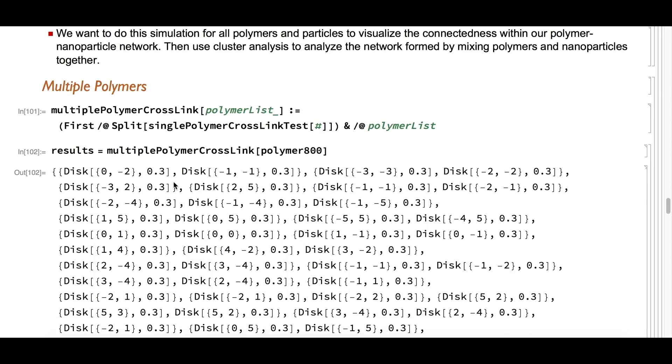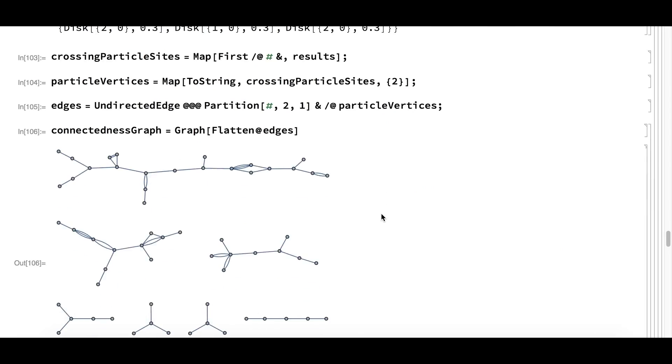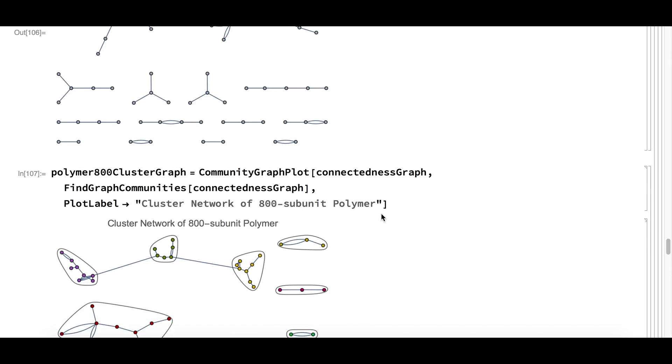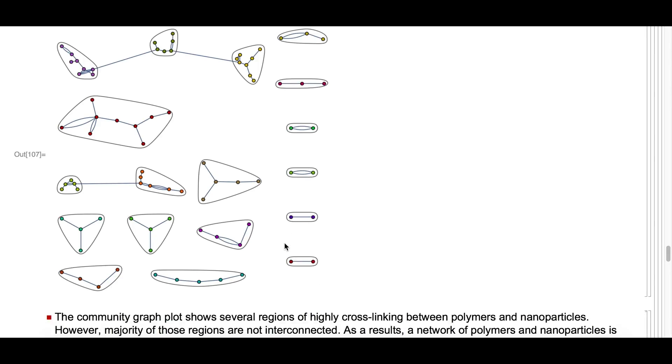We write a function that runs SinglePolymerCrossLinkTest over many polymers of the same length. What I want to show you is the GraphCommunityPlot and FindGraphCommunities. In this graph, you see that there are many clusters which have very dense cross-linking between polymer and nanoparticles. However, most of the clusters do not connect together. This suggests that the network of polymer and nanoparticles may not be formed even though you have many clusters of densely cross-linked nanoparticles and polymers.